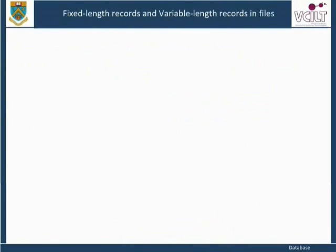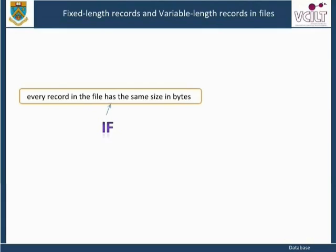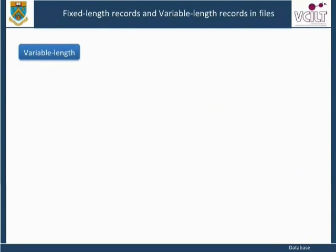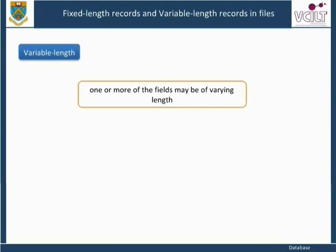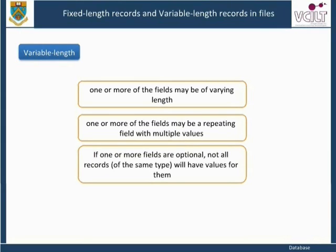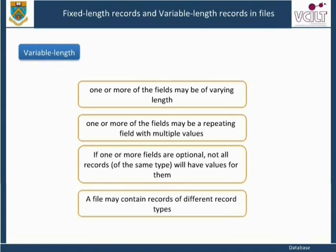Fixed length records are those where every record in the file has the same size in bytes. Variable length records exist when different records in the file have different sizes. Variable length records may arise because: one or more fields may be of varying length; one or more fields may be repeating fields with multiple values; or if one or more fields are optional, not all records will have values for them.